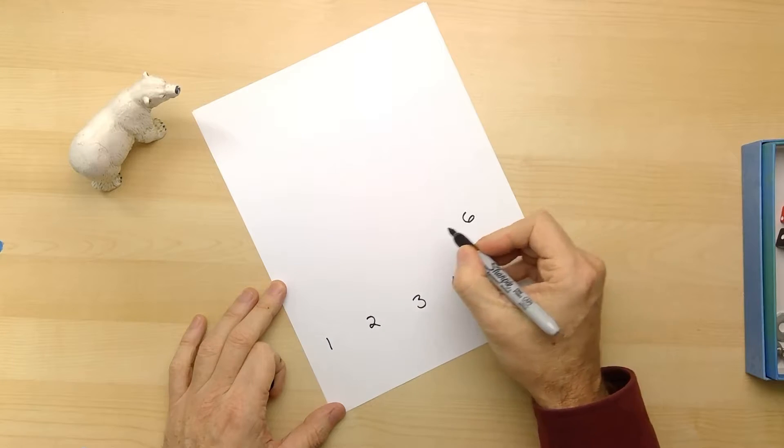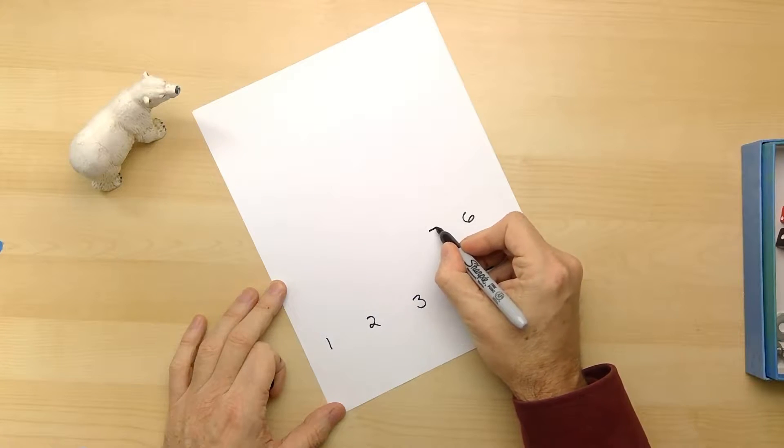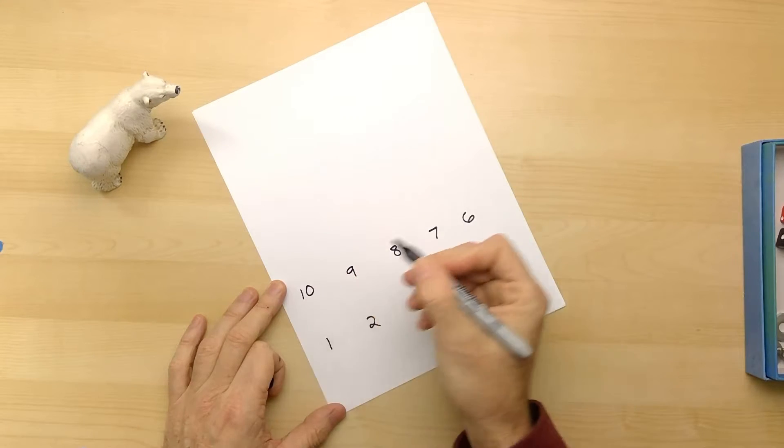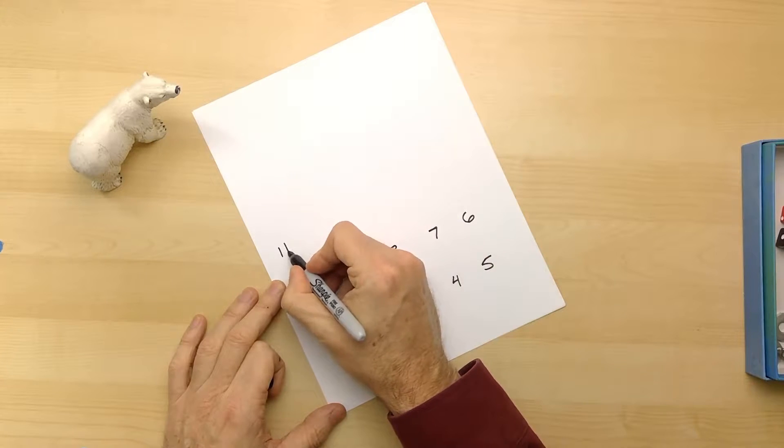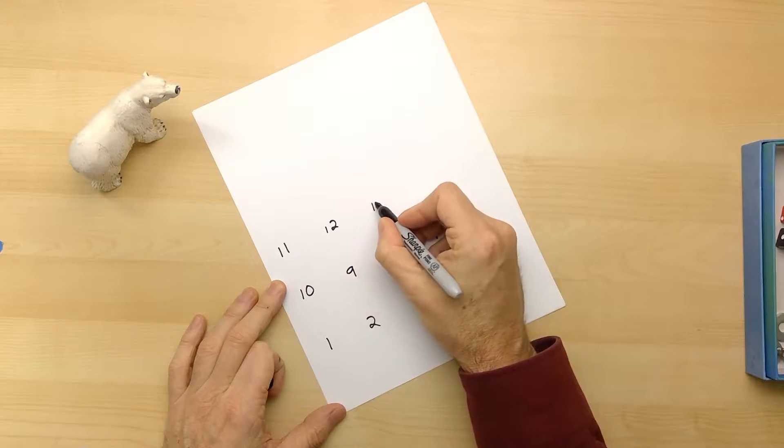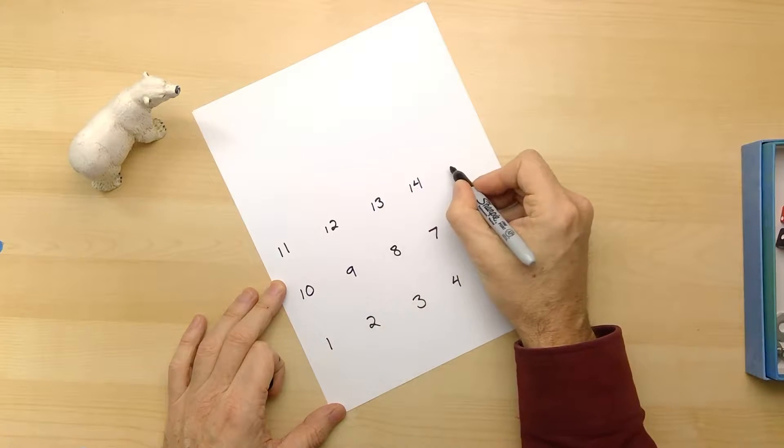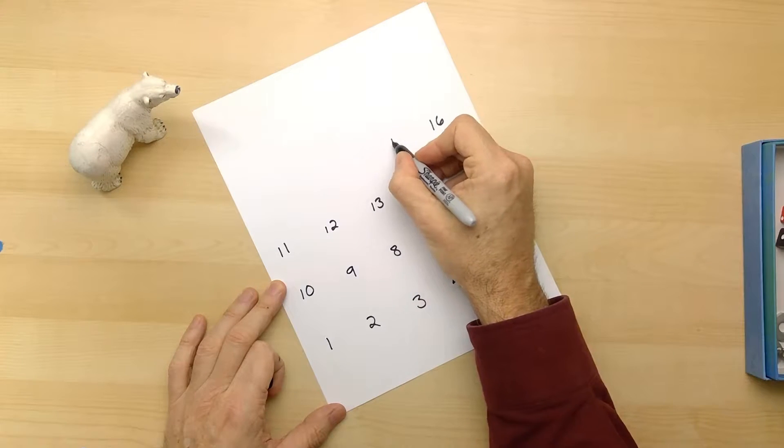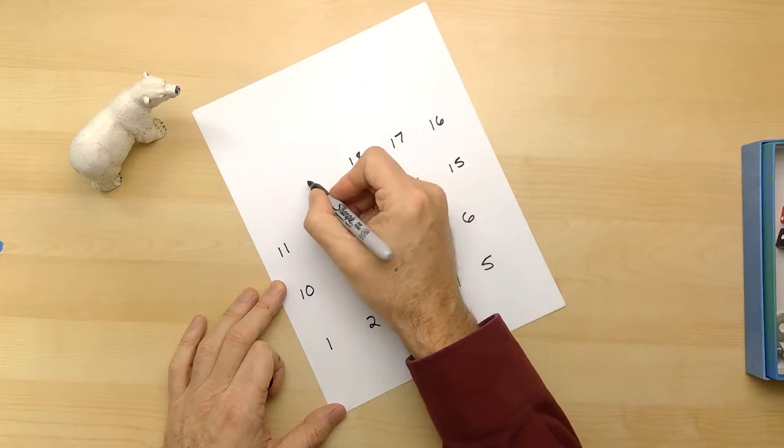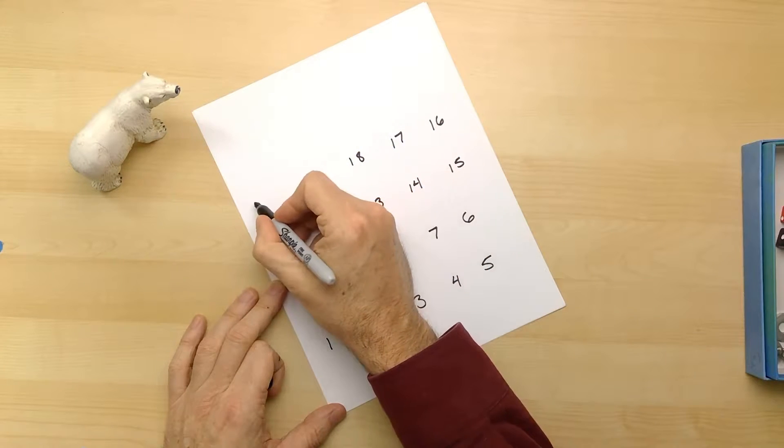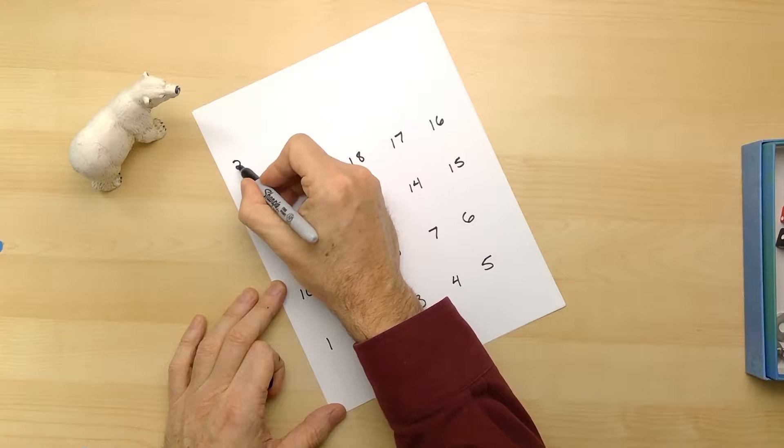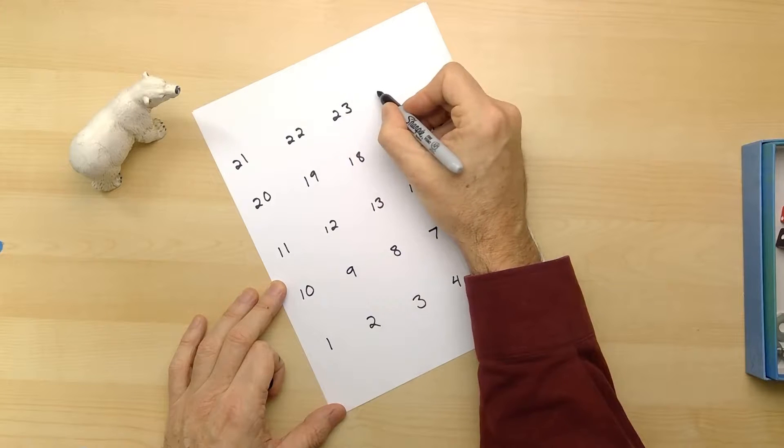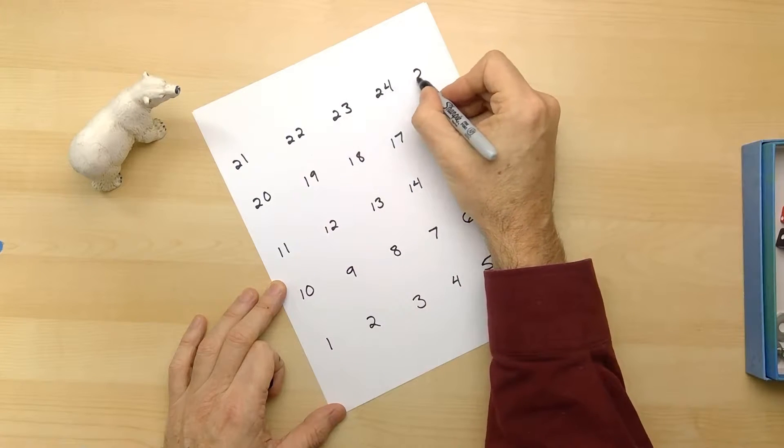And up here let's go ahead and put six, and then seven, and then eight, nine, ten. Keep counting - eleven, twelve, thirteen, fourteen, fifteen, sixteen, seventeen, eighteen, nineteen, twenty, twenty-one, twenty-two, twenty-three, twenty-four, and let's stop at twenty-five.